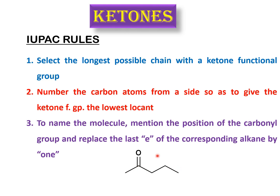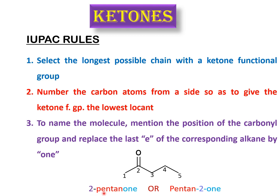This carbonyl carbon gets position four from the right-hand side and two from the left-hand side, so you number this chain from the left-hand side to give the lowest position to this carbonyl carbon. To name the molecule, you mention the position of the carbonyl functional group and replace the last 'e' of the corresponding alkane by '-one'. This is a five-carbon chain, so the corresponding alkane is pentane. You replace the last 'e' of pentane with '-one', and mention the position of the carbonyl group. The name becomes 2-pentanone — the last 'e' of pentane is replaced by '-one'.